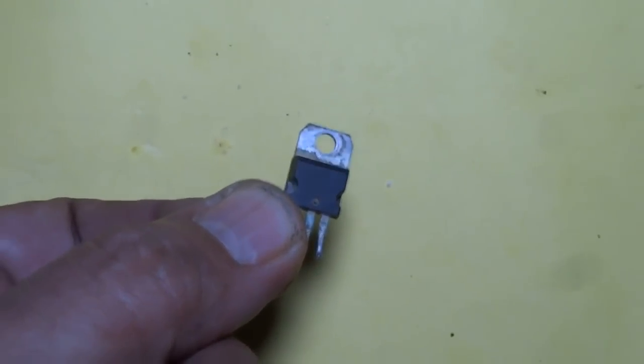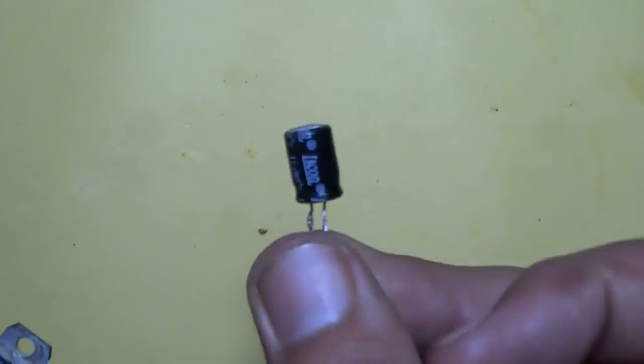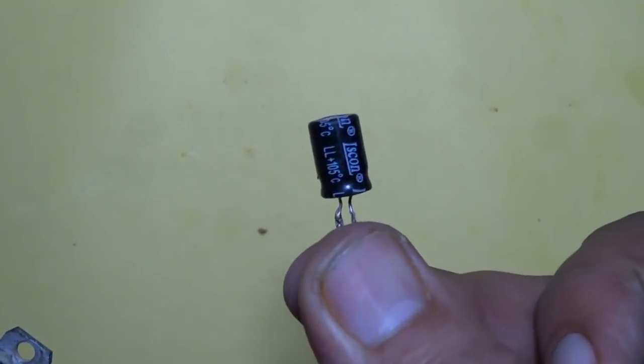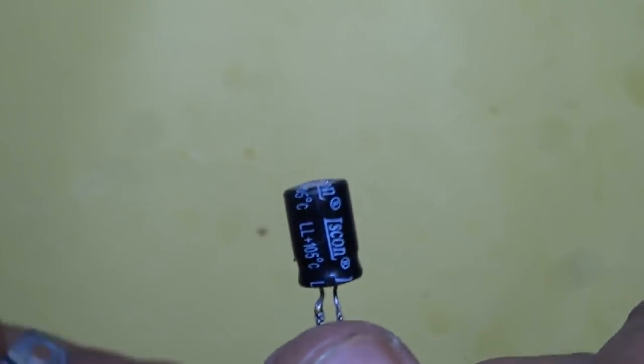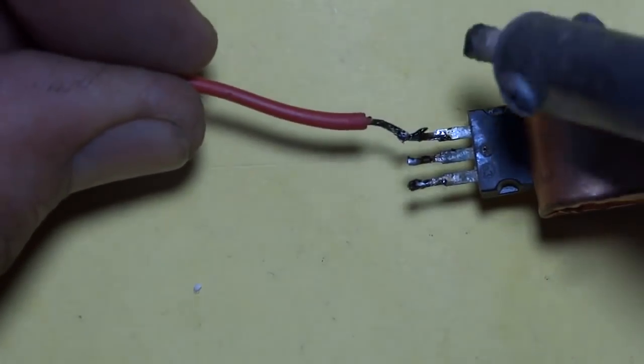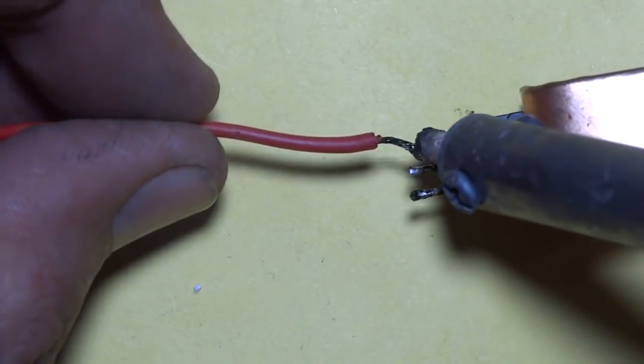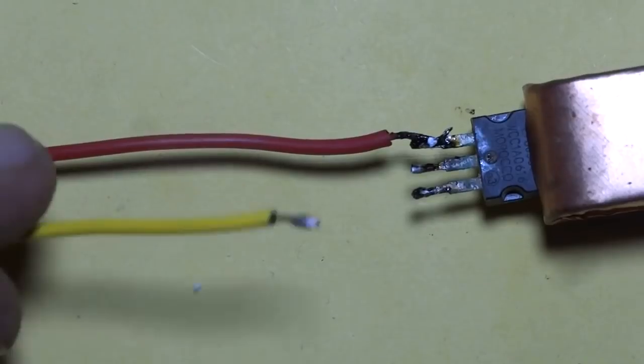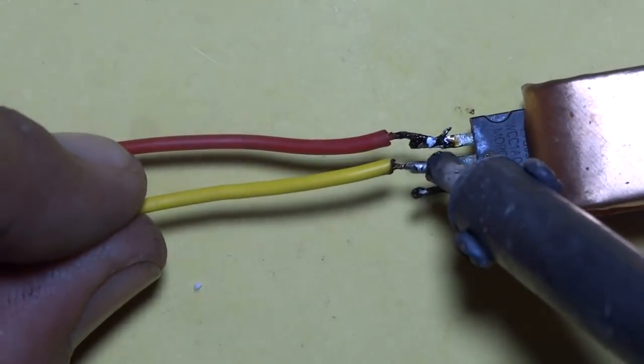It is transistor 7805. Condenser 470 uf. It is positive input wire. It is negative input wire.